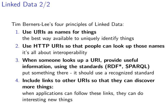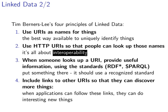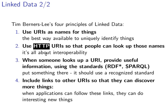Whenever we use URIs, we should use HTTP URIs so people can look up those names. For a subject, predicate, or object, we need to make them HTTP URIs rather than FTP, SMTP, or mail-to URIs. The reason is that HTTP always allows us to look up and retrieve data, read, and learn more about things to maximize the benefit. Other URI schemes like SMTP or mail-to may not be as useful for sharing and interoperability.